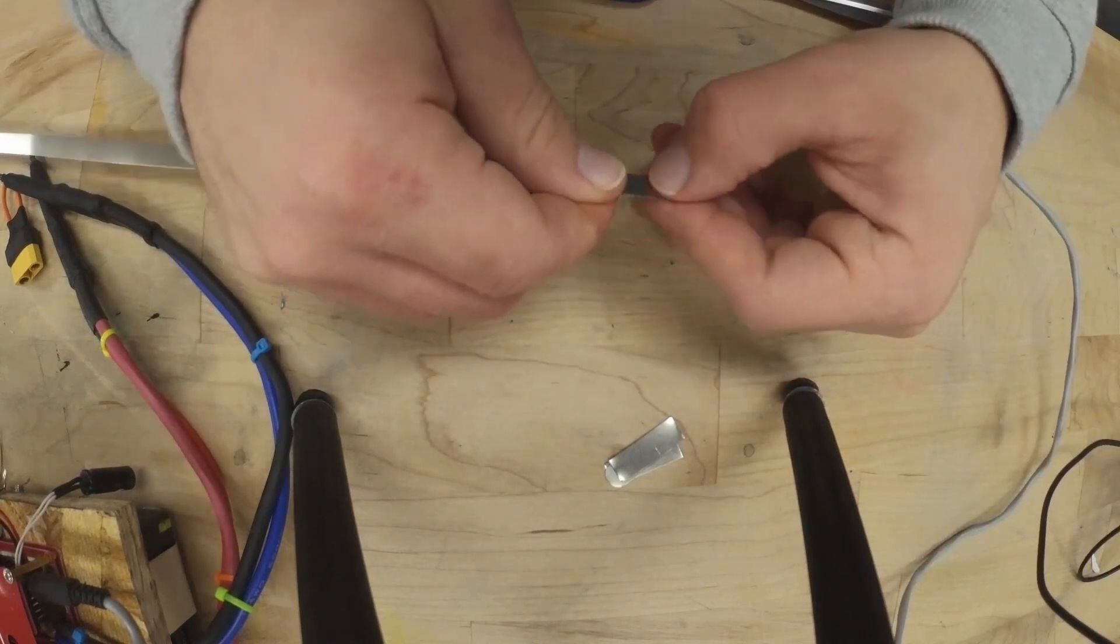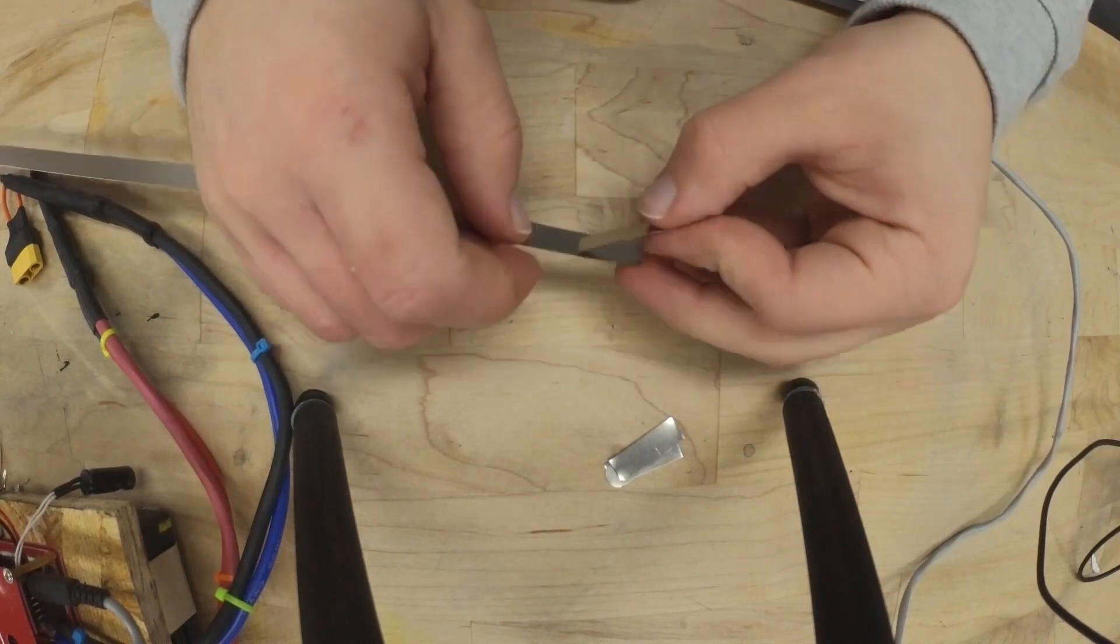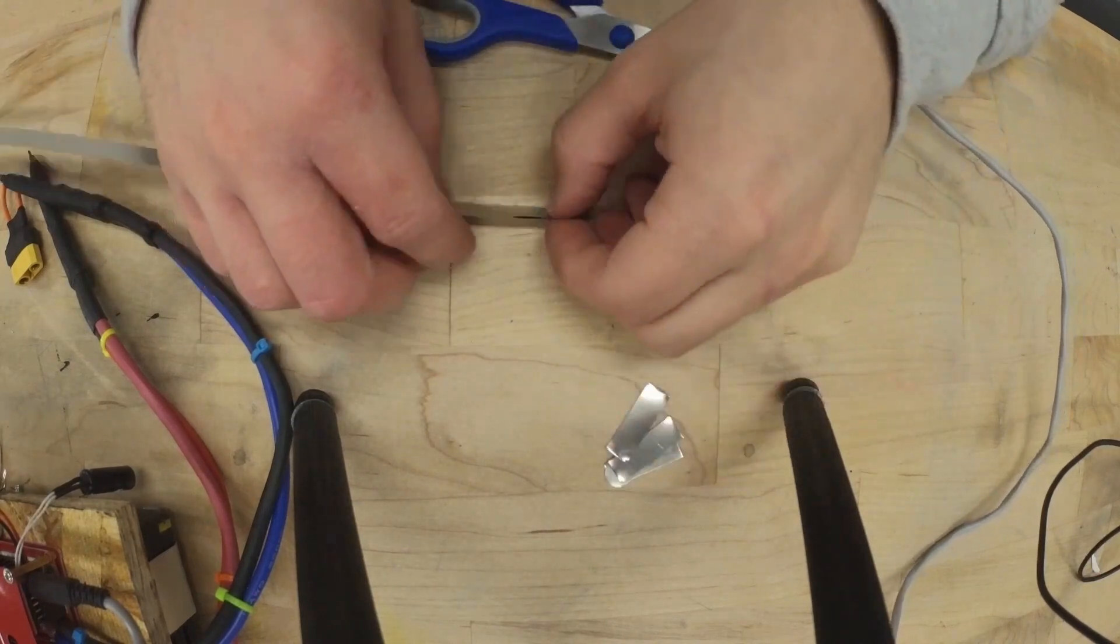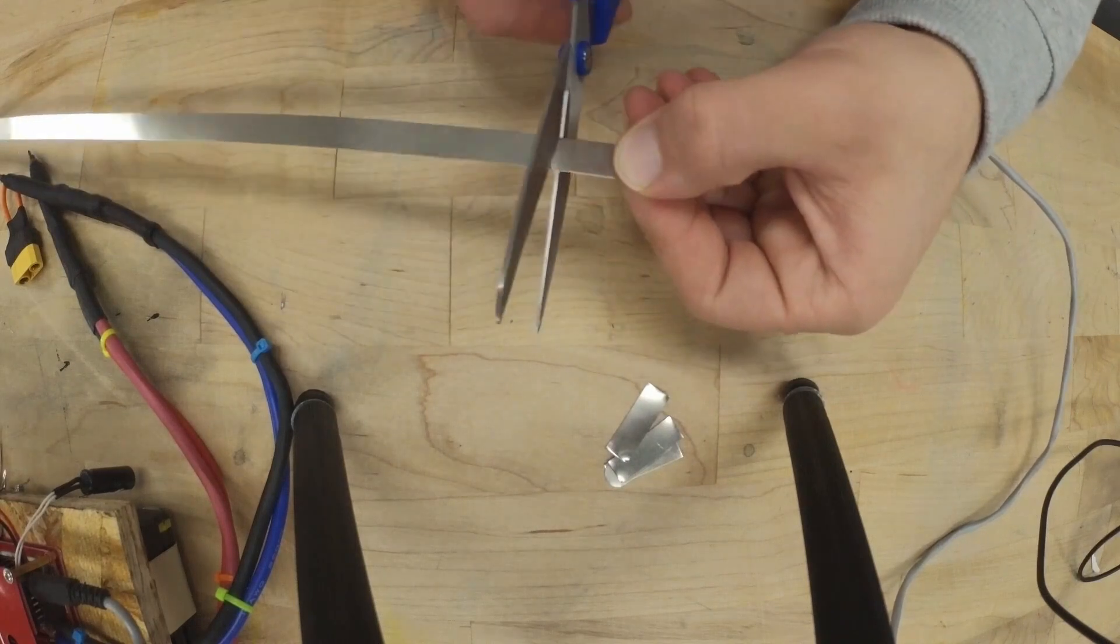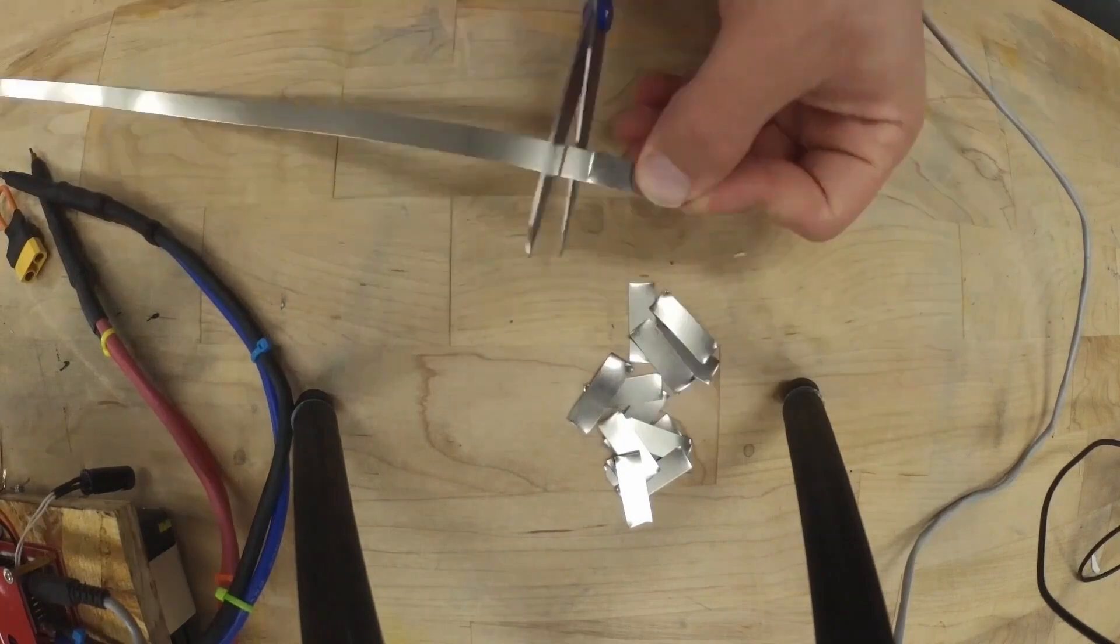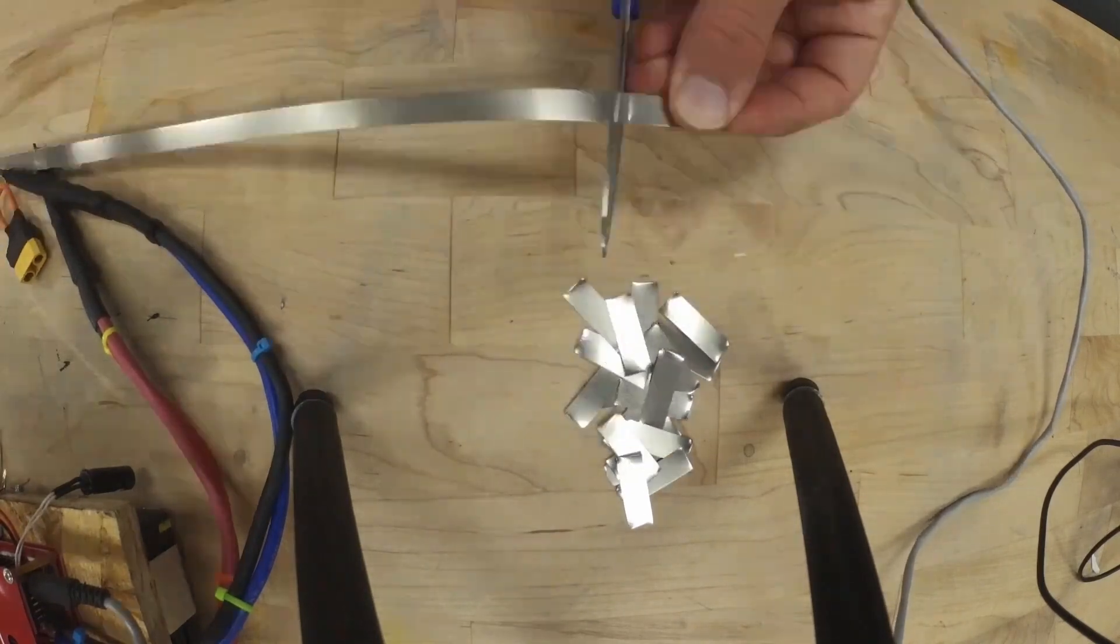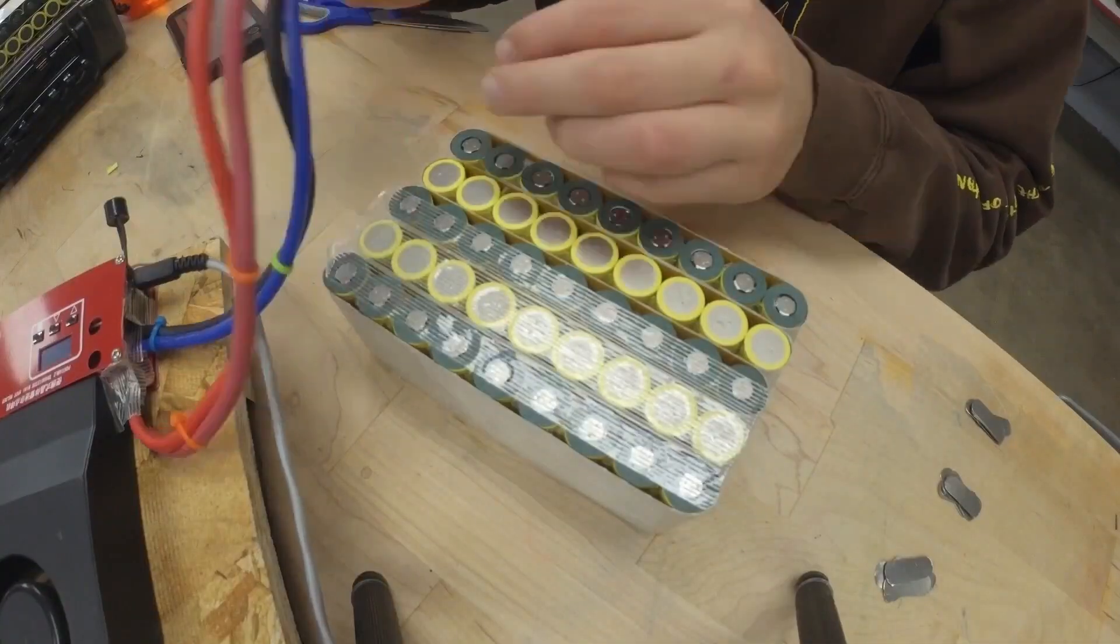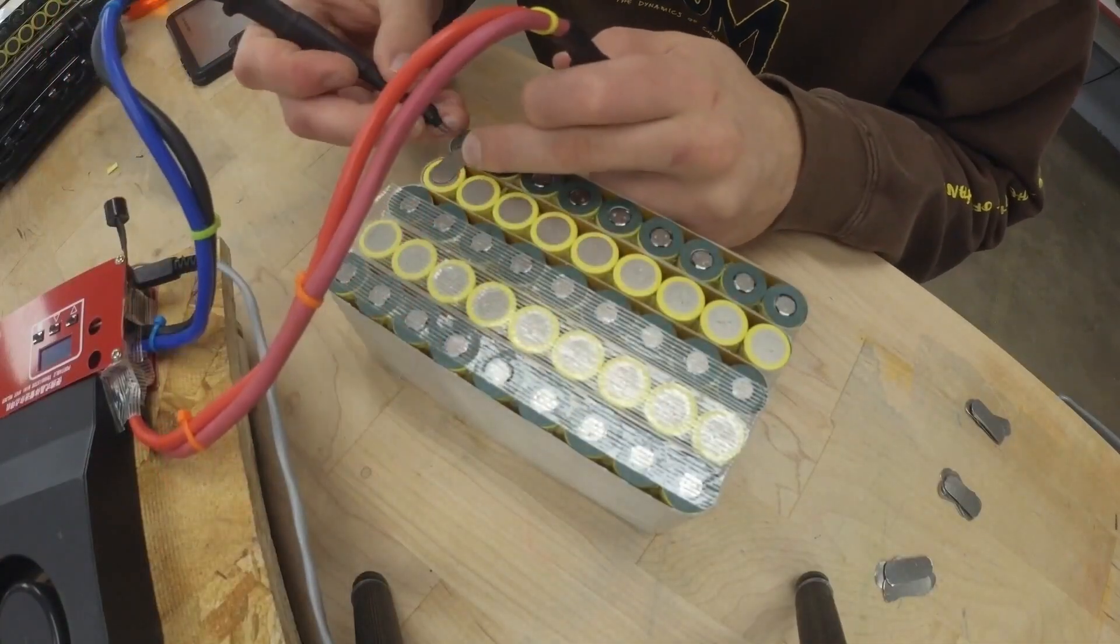Here I measure and cut all the nickel needed for the series connections. I started by welding all series connections followed by parallel groups.